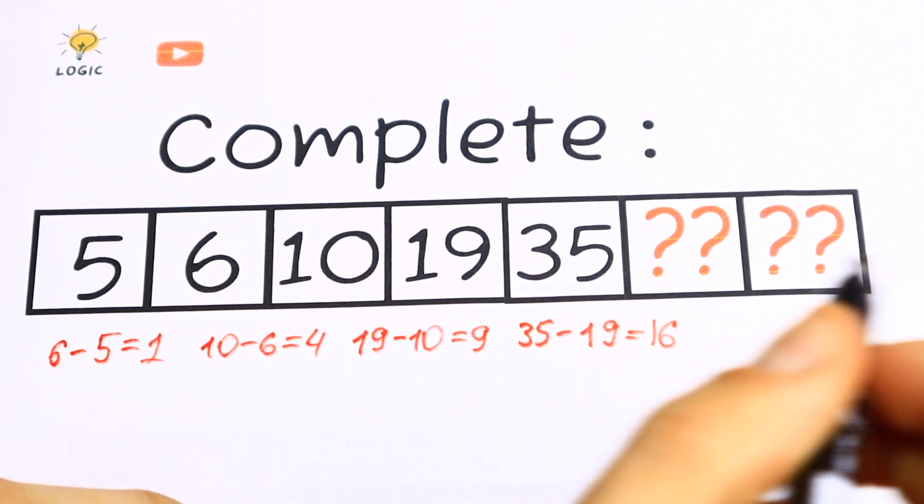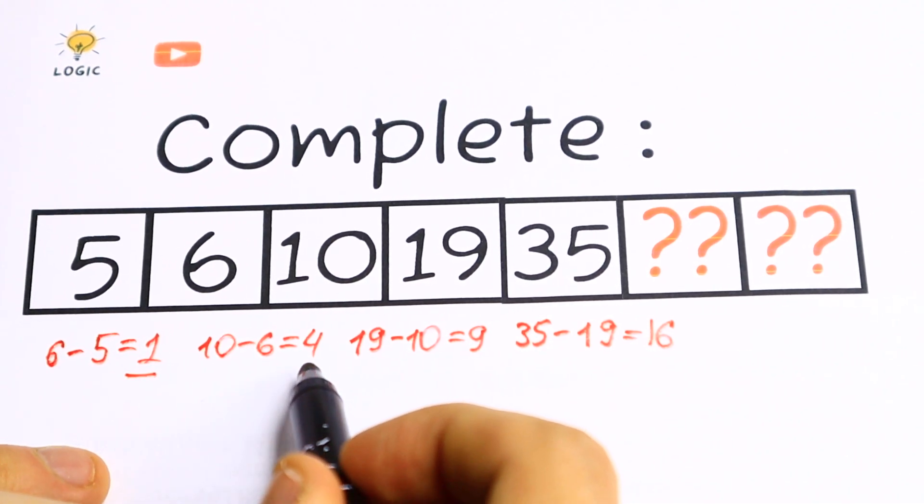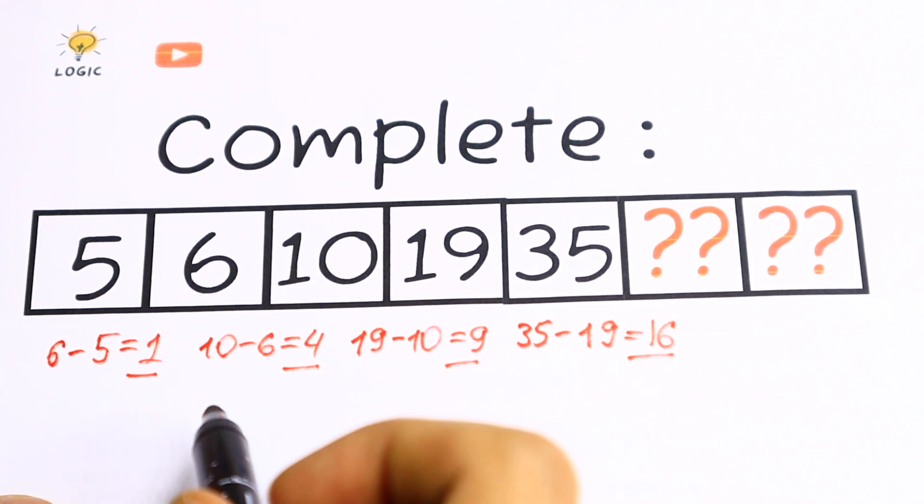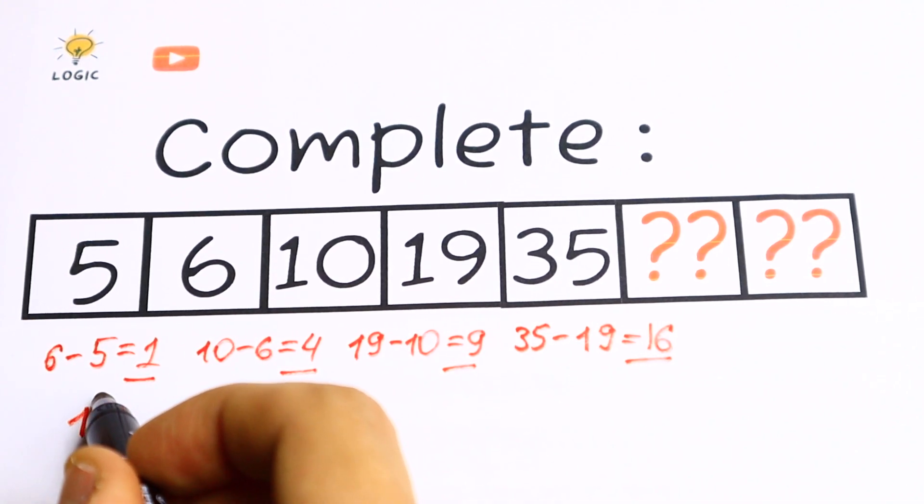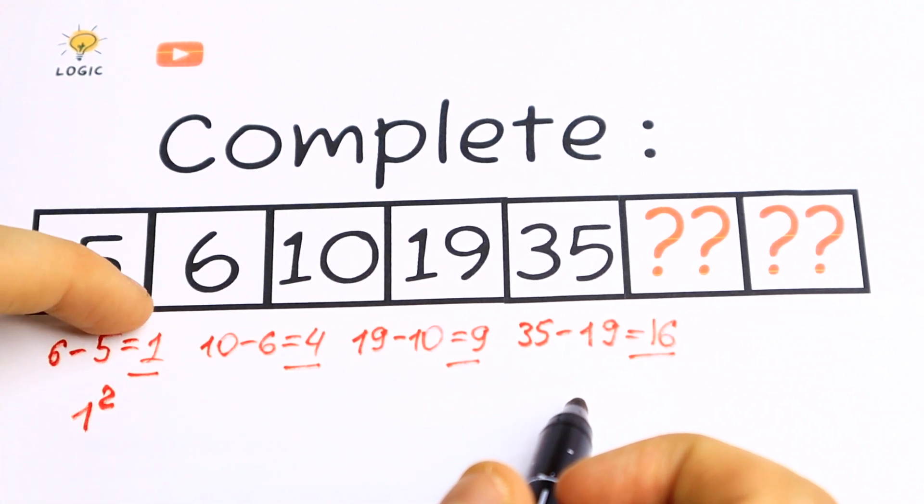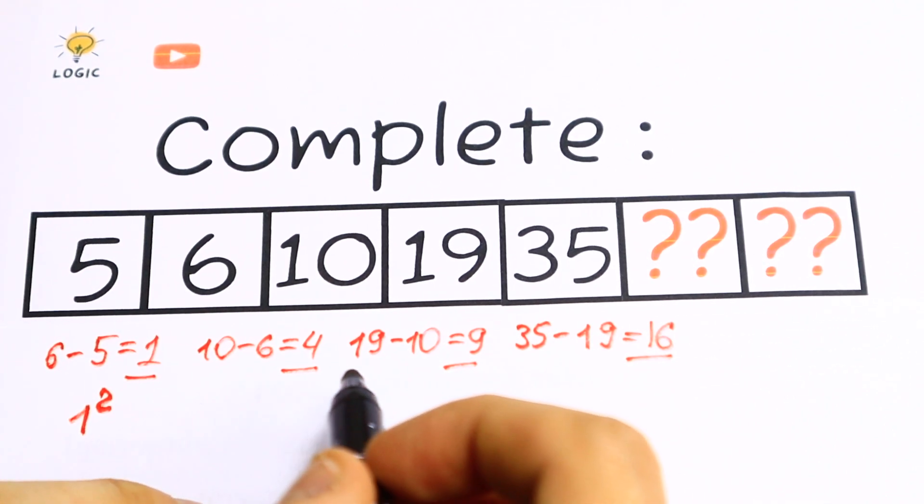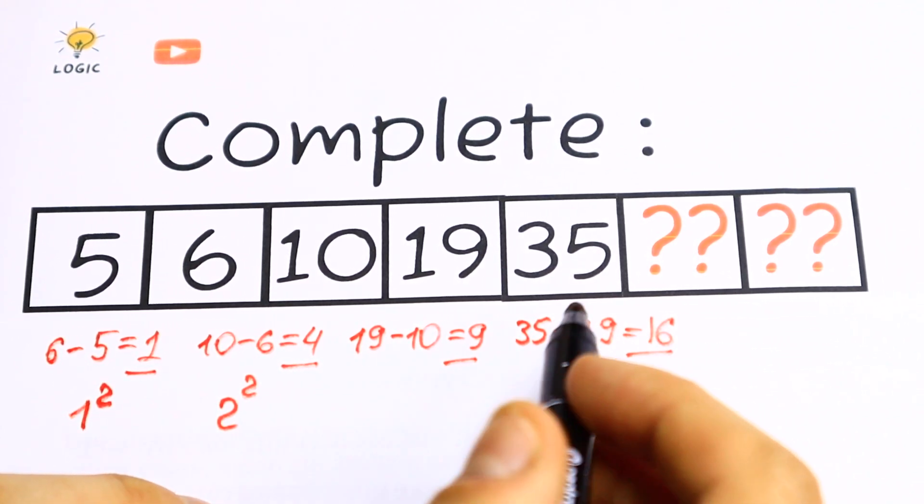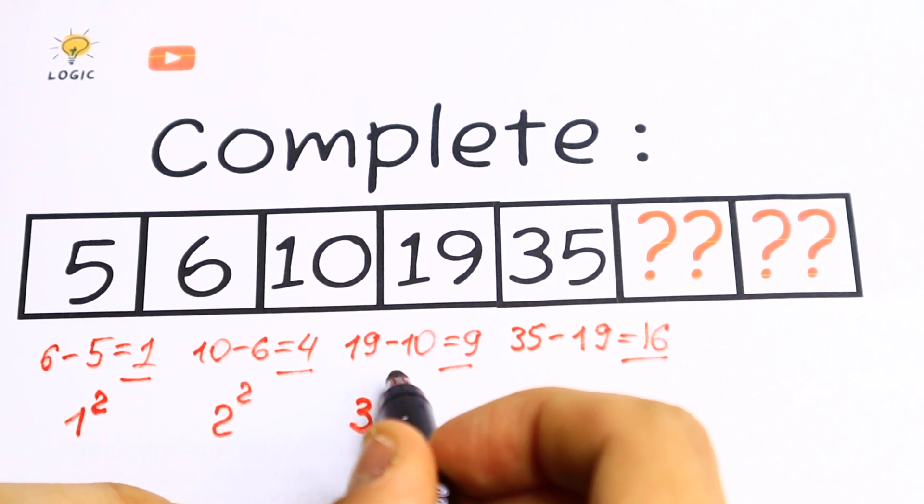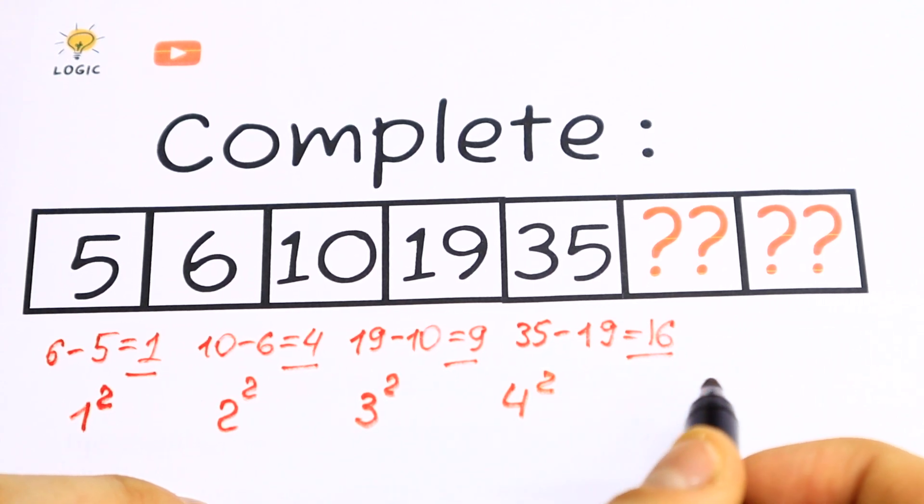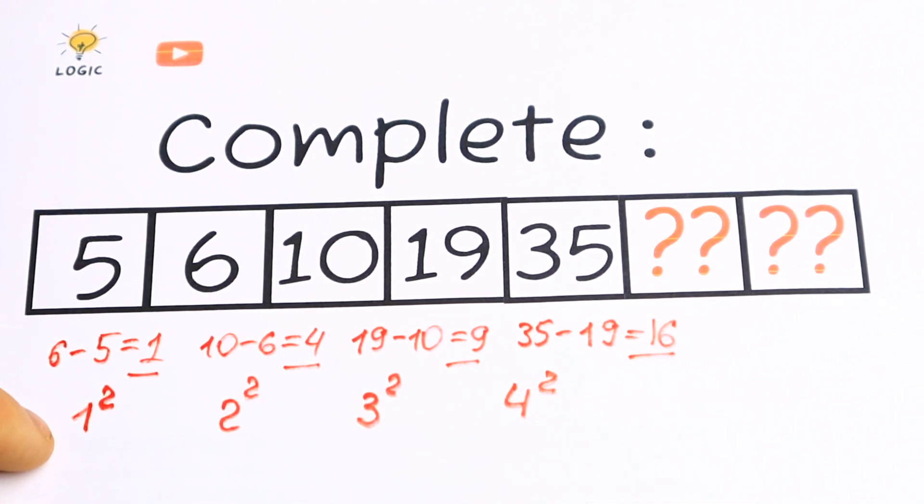And take a look what the result we will have. Right here we have 1. Right here we have 4, 9 and 16. And if we raise this to the second power, 1 square, nothing change. But right here we have 1. Result 1 square. This 4 can be written as 2 square. This 9 can be written as 3 square. And this 16, of course, as 4 square. Because 4 times 4 equal to 16. And take a look. We have 1 square, 2 square, 3 square and 4 square.